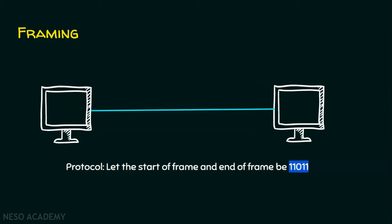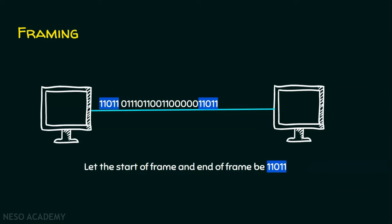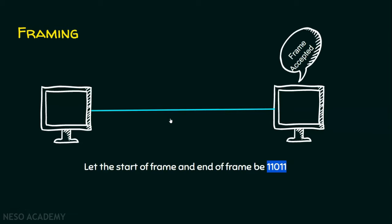The sender creates the data and the frame. The information received from the network layer — the packet — has a header and trailer added to it: 11011 as the start of the frame and 11011 as the end of the frame. When the data is accepted by the receiver, it understands this is the end of the frame and accepts it, because this node also knows that the start of the frame is 11011 and the end of the frame is 11011.